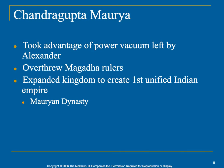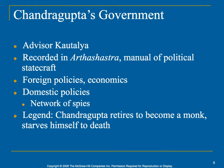Then you have a very well-known leader in India during this time period — his name is Chandragupta. He basically takes over the power vacuum where Alexander the Great left off, overthrows the other rulers, and expands his kingdom to create one unified Indian empire. In terms of government, he has several advisors covering foreign policy, economics, domestic policies, and a network of spies, which seems to be the ongoing theme throughout most of these empires.